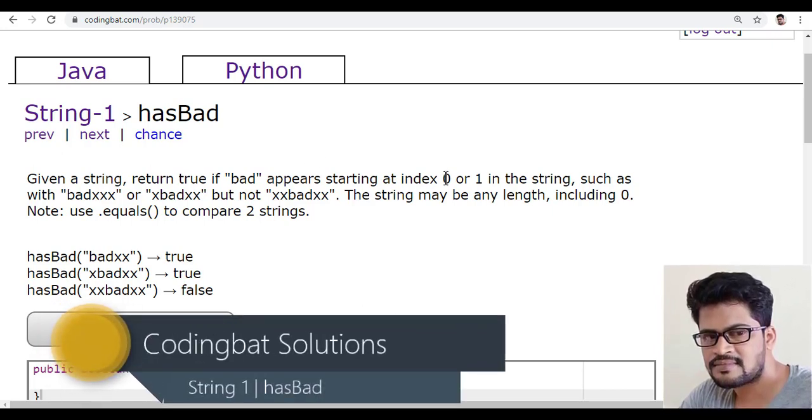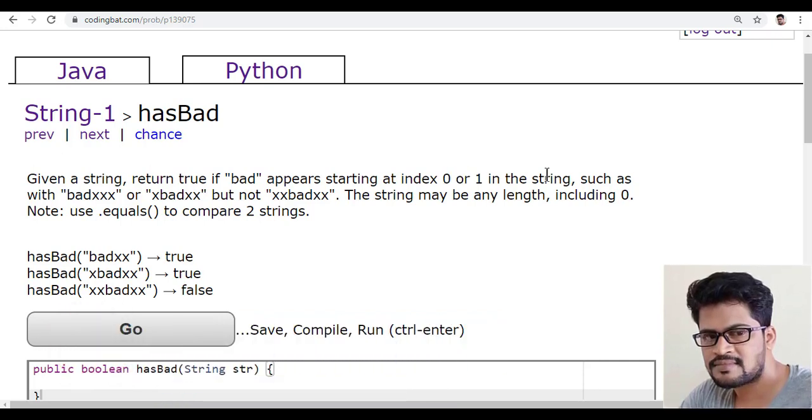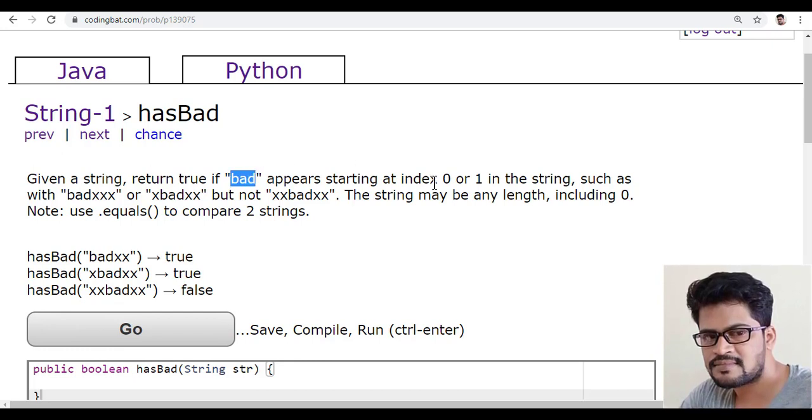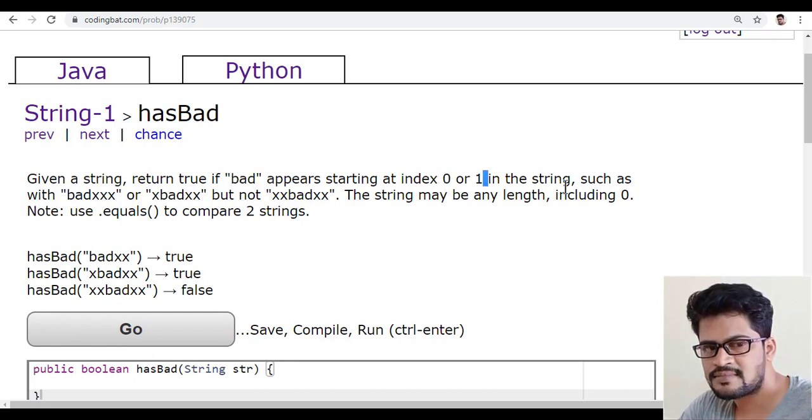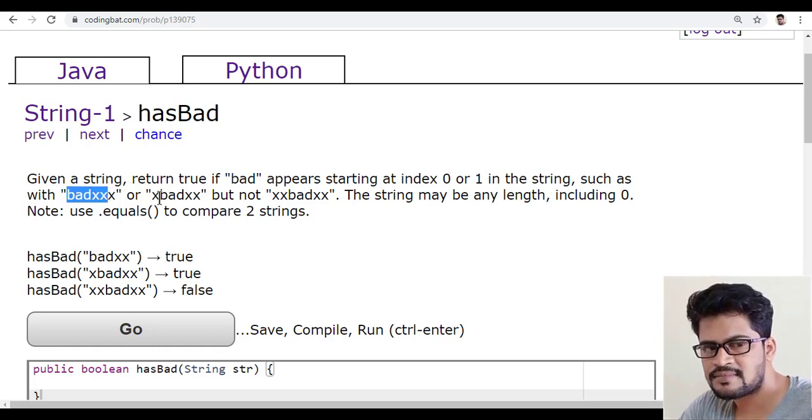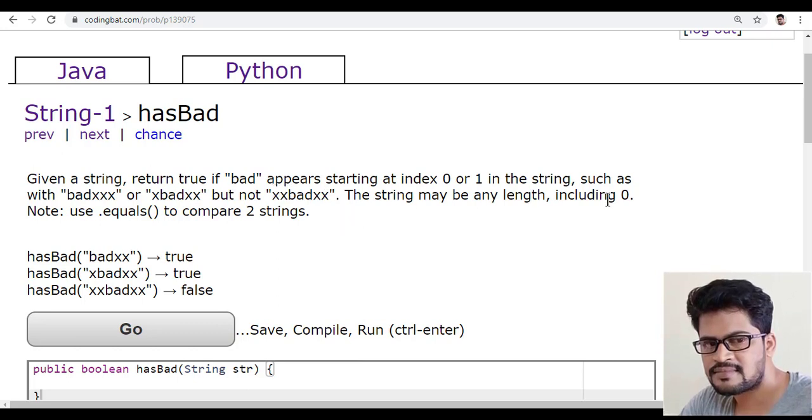We should return true if the 'bad' string appears at index 0 or 1, such as badxxx or xbadxx, but not xxbad. The string may be any length including zero. We can use the dot equals function to compare two strings.